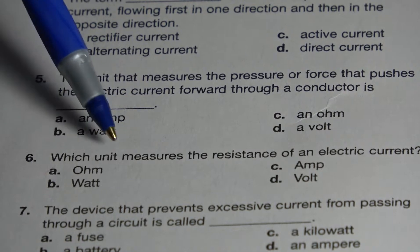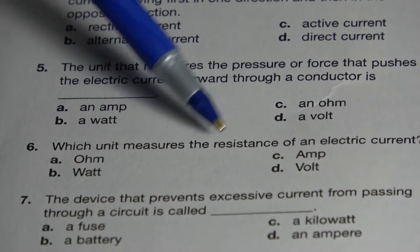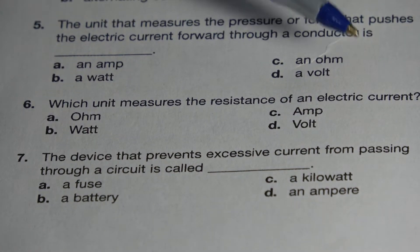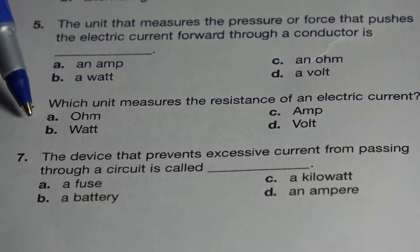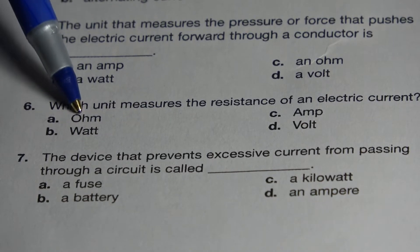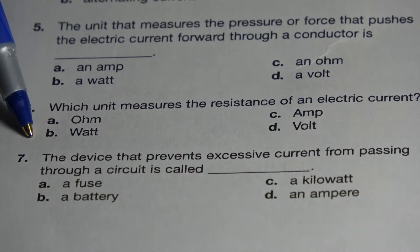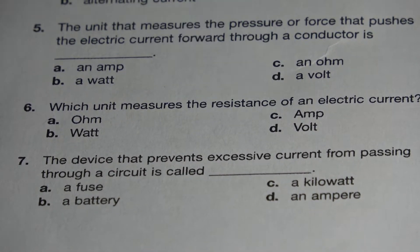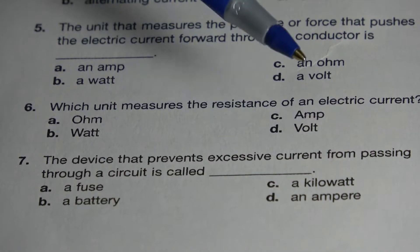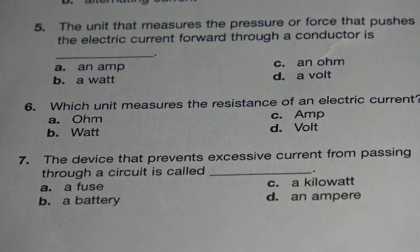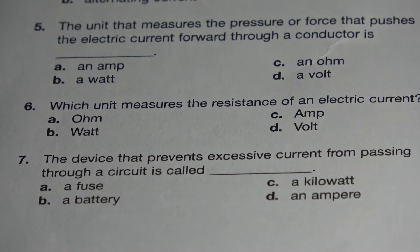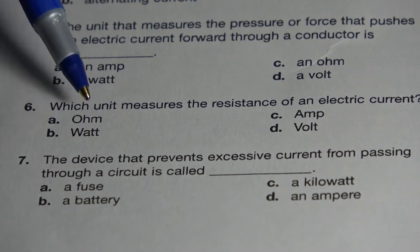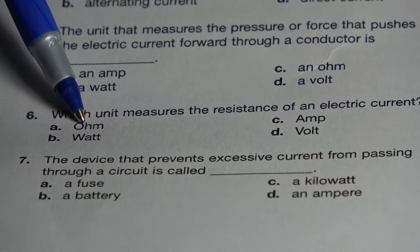Number 6. Which unit measures the resistance of electric current? Is it A: an ohm, B: a watt, C: an amp, or D: a volt? The correct answer is A: an ohm.